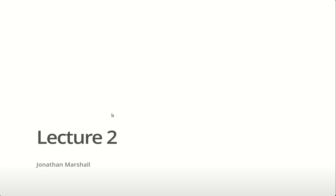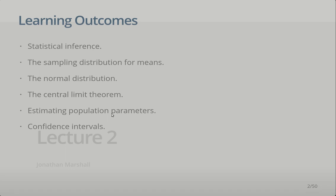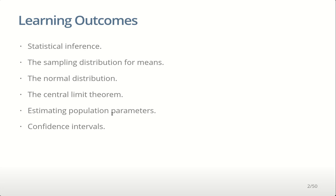Hi there and welcome to lecture 2 for Biostats. Today we're talking about statistical inference, which is essentially the process of how we go from a sample — which has information we want on it, such as the average age or the proportion of animals diseased — to the population, which is actually the question we're interested in: the set of people or animals we're interested in. So how can we go from a subset of that population back to the full population?